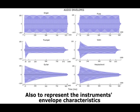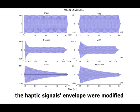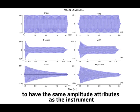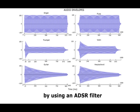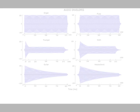Also, to represent the instrument's envelope characteristics, the haptic signal's envelope was modified to have the same amplitude attributes as the instrument by using an ADSR filter.